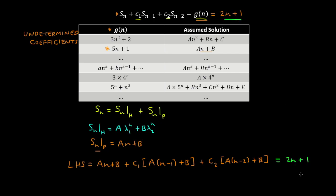And you're effectively equating the coefficients of n, and also the coefficients of n to the power 0, which is 1. And therefore you can solve for the constants a and b, and obtain a particular solution of this form.